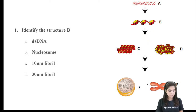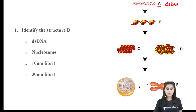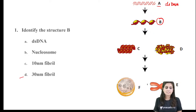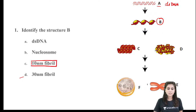The first question is: identify structure B. Whenever it's an image-based question, do not jump to an answer. Look at the picture, try to understand every part of it, and then answer. Structure A is double-stranded DNA. They are asking you about structure B — is it double-stranded DNA, a nucleosome, or a 10 nanometer fibril? The answer is C: structure B is the 10 nanometer fibril.